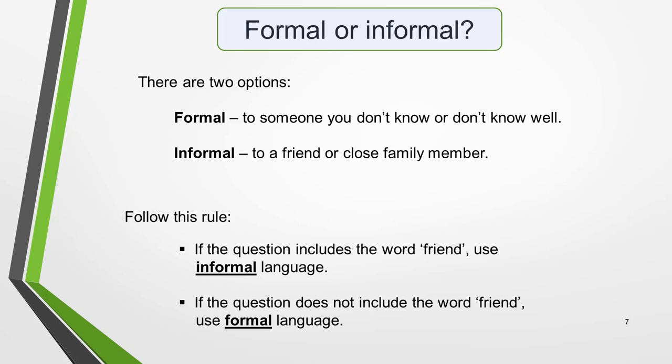IELTS letters must be written in the appropriate tone and style. There are two options: formal, to someone you don't know or don't know well, and informal, to a friend. It's essential that you are able to identify what type of letter you're required to write. Follow this rule: if a question includes the word 'friend,' use informal language. If it does not include the word 'friend,' use formal language. For this question, we'll write a formal letter.